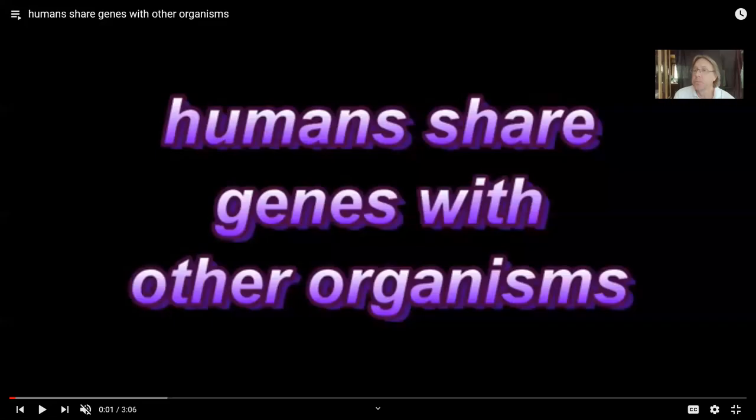As I've described elsewhere, there are multiple models for how life's diversity arose to its current condition. There is an evolution model, there is a creation model, there is an intelligent design model. In science, it's appropriate to doubt, to question, to propose alternate explanations. But then the next step is to test those. Does the evidence support the prediction of any of these models?